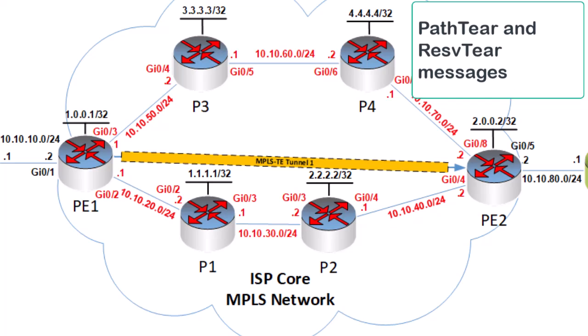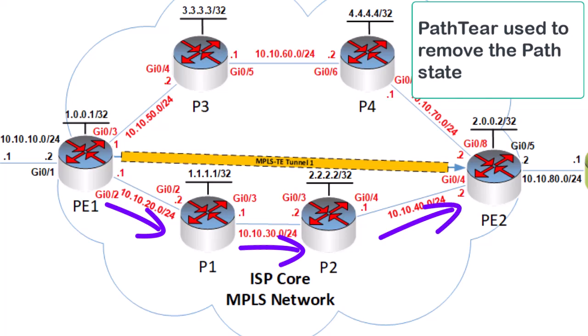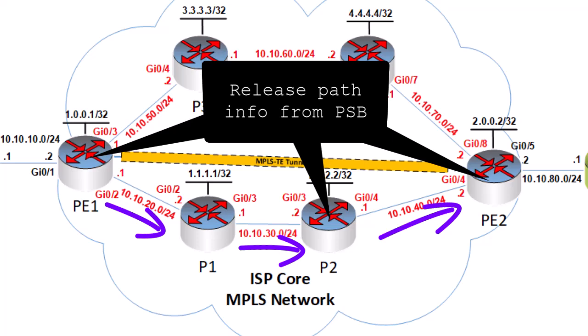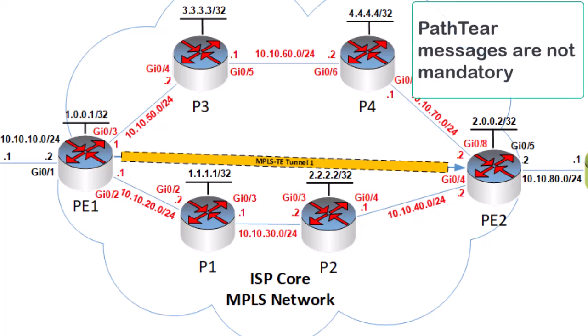Two more messages used by RSVP are the path tear and the reserve tear messages. The path tear message is used to remove the path state. This typically occurs when the head end router decides to tear down a tunnel, or when the path state expires due to a timeout. Upon receiving this message, a router releases the allocated bandwidth — making it available for other reservations — and updates that information in its PSB. The path tear message travels downstream following the same path as the original path message towards the tail end router. Path tear messages are not mandatory; you can allow a tunnel to simply expire due to its timeout. If a head end router doesn't need a tunnel anymore, it can simply stop sending path messages. By default such a timeout is set to 30 seconds, however path tear messages help accelerate network convergence rather than waiting for that timeout to expire.